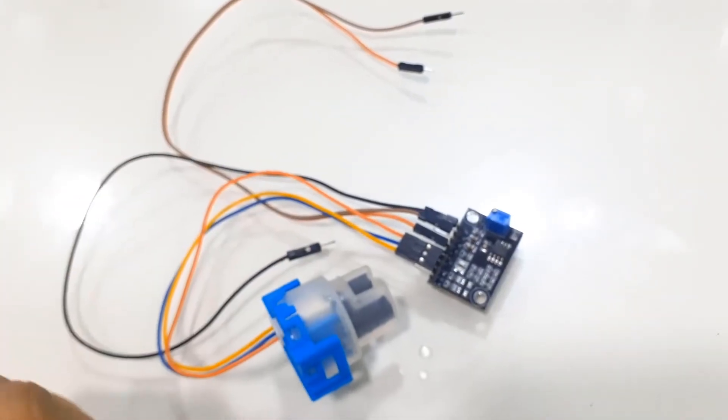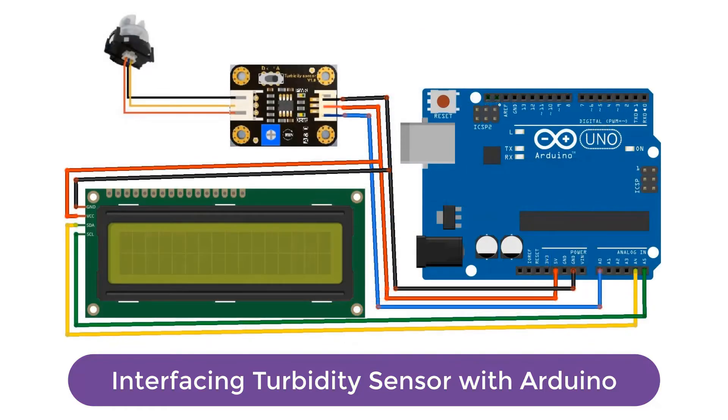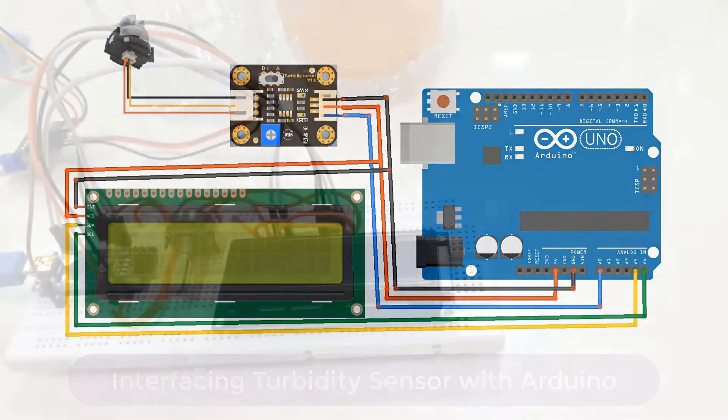Now let us interface the turbidity sensor with Arduino. The connection is fairly simple. Connect its VCC to 5V and GND to GND of Arduino. Connect the output analog pin to A0 of Arduino. Basically, the sensor is mostly used for analog applications. In order to display the turbidity on LCD display, I have connected an I2C LCD display as shown in the image. So, here is the circuit assembly.